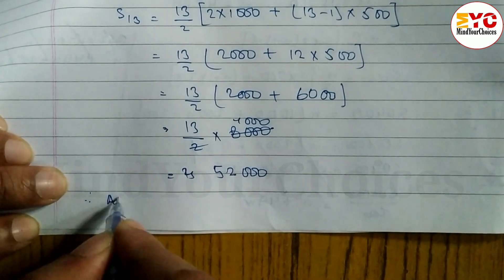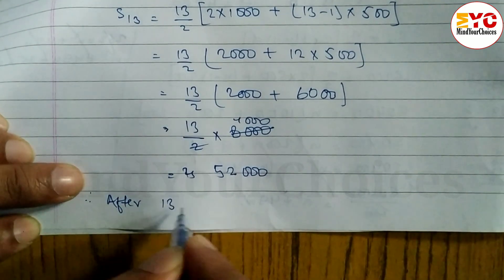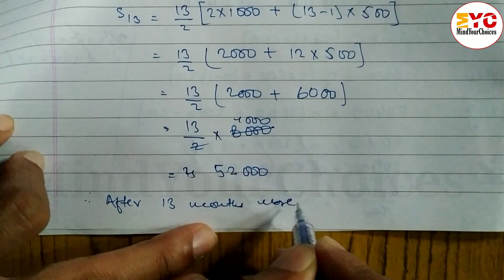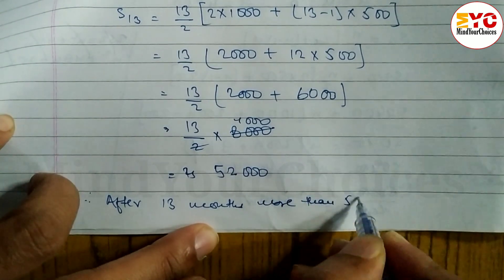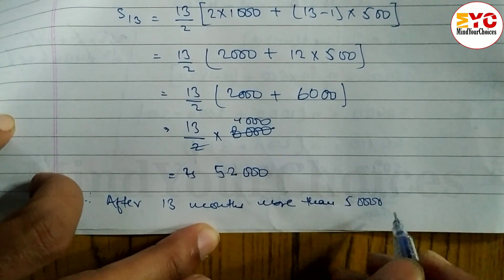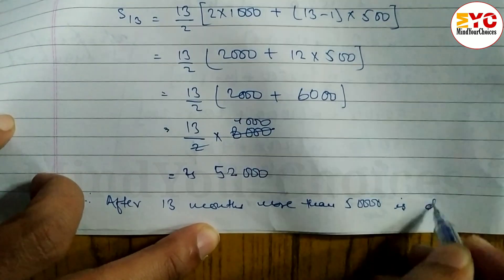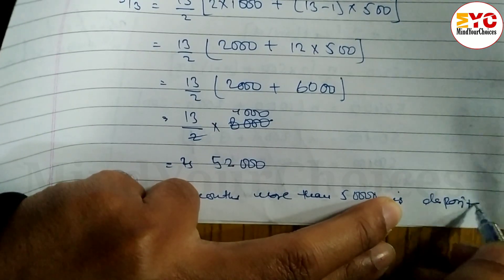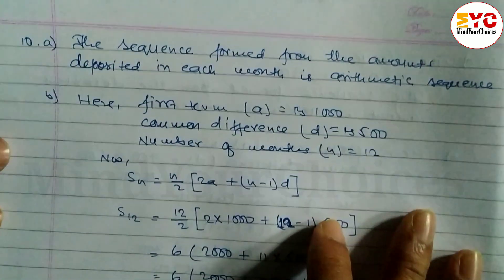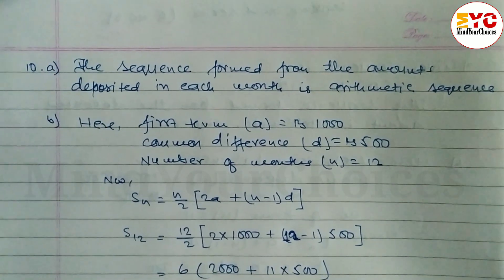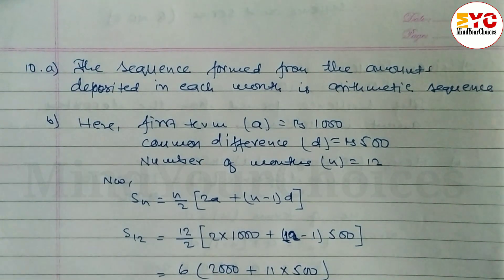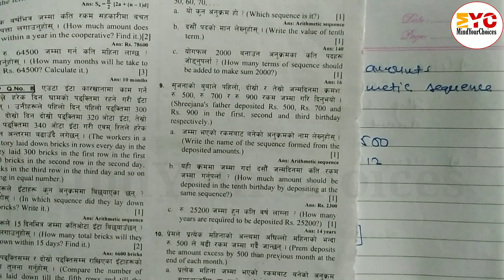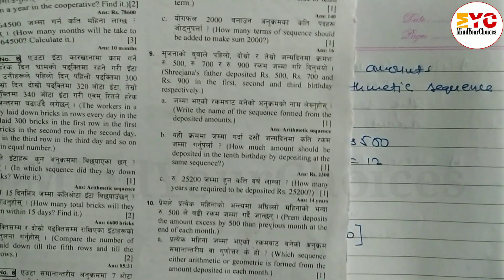So we can write: after 13 months, more than rupees 50,000 is deposited. Hope you understand this question number 10 taken from class 10 sequence and series. Please like, subscribe, and share with your friends. Thanks for watching till the end — keep supporting and keep sharing.